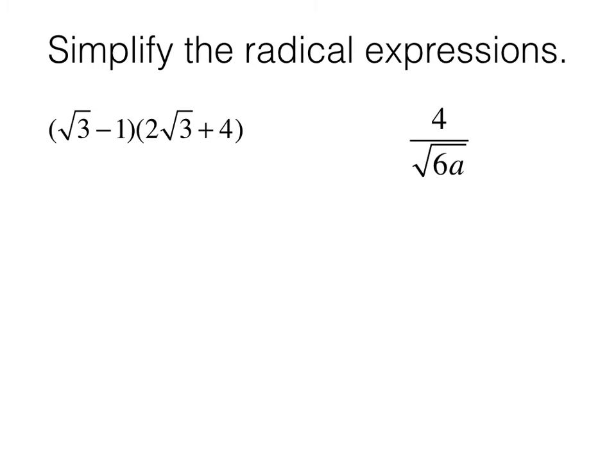Next example, we're asked to simplify a radical expression where there's a product of two binomials. In essence, we can use FOIL. We also could have used the box strategy or double distributive. I'll use FOIL. So F stands for the first two. So when we multiply these first two terms together, we get 2 times 3, or 6.